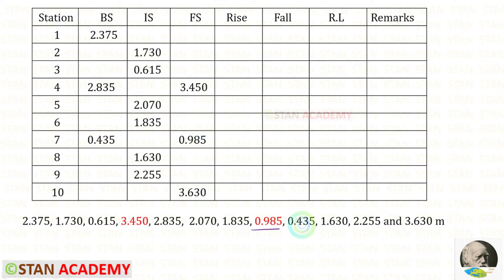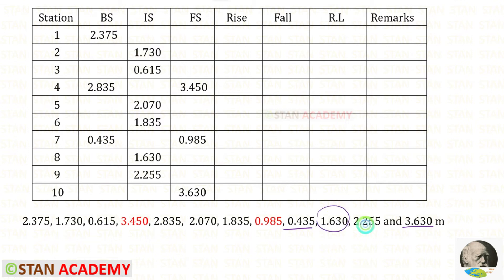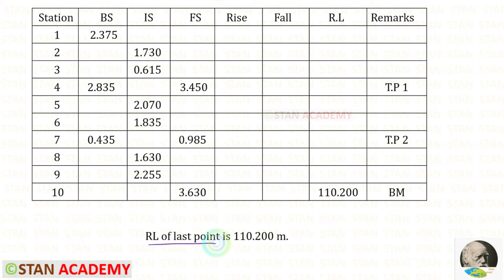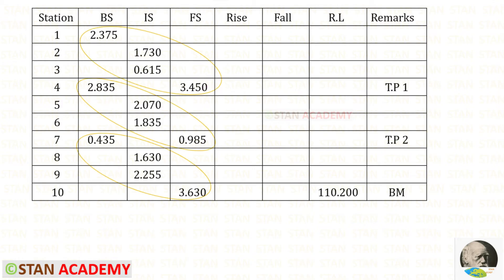After the foresight, this reading should be the backsight at the same station as the foresight. This is the backsight and this is the last reading, so it should be the foresight, and these two readings should be the intermediate sights. Let us enter them and then the foresight. The reduced level of the last station is given as 110.2 meters. In the fourth and seventh stations we have both backsight and foresight, so these two stations are the turning points.